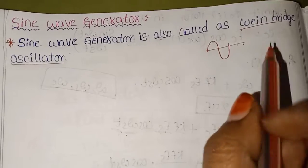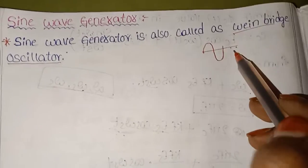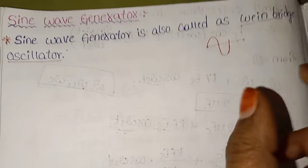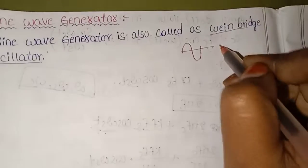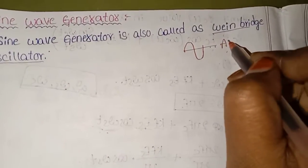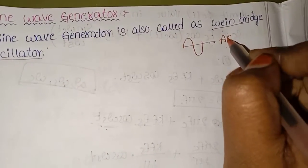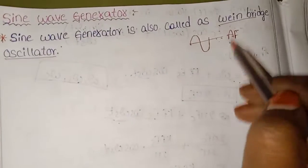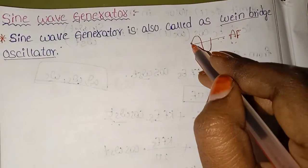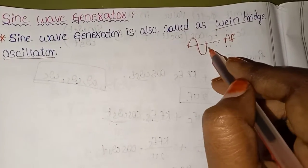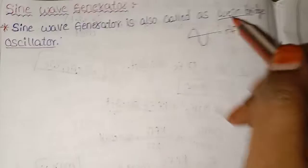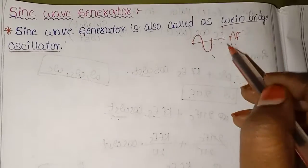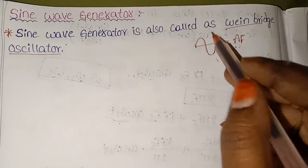The sine wave generator is also called a Wien Bridge oscillator. This waveform is related to sound — specifically the audio frequency (AF) of sound. So we can produce a sine wave at audio frequencies.